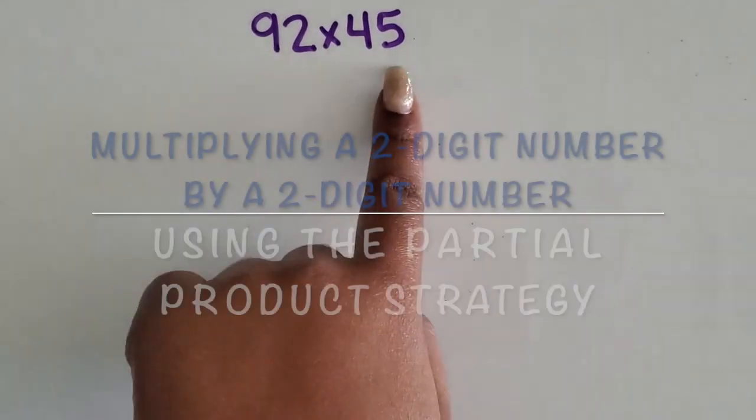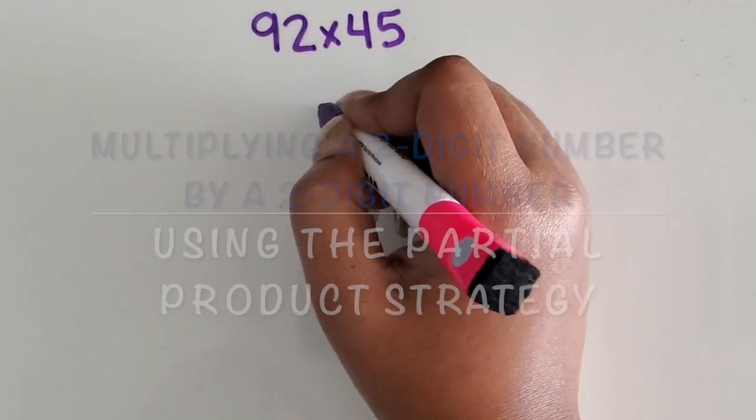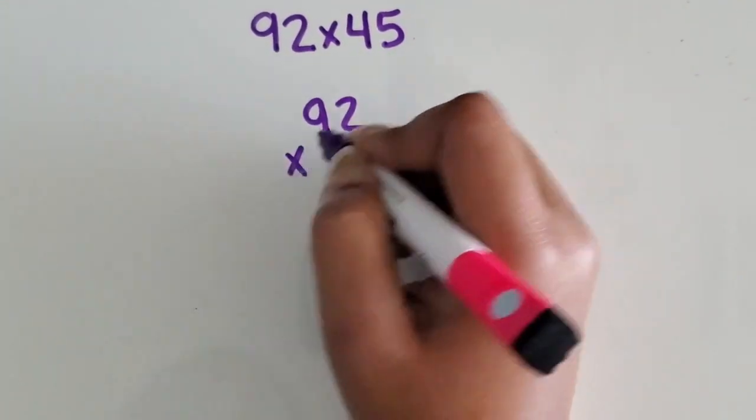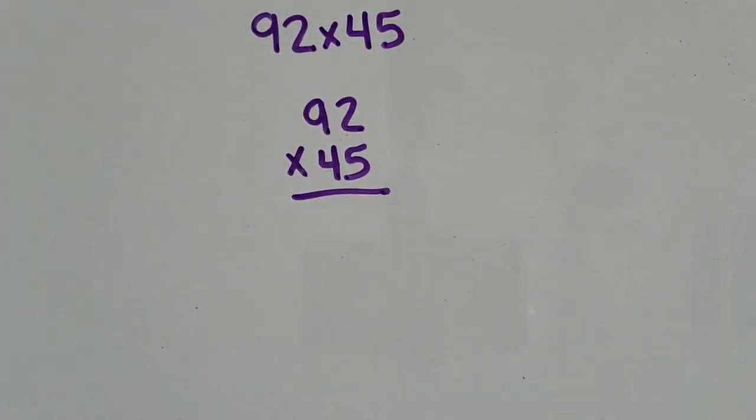I'm going to multiply a two-digit number by another two-digit number using the partial product strategy. We'll set it up similar to standard algorithm, but we are going to focus on the separate values of each digit in order to find our total product.